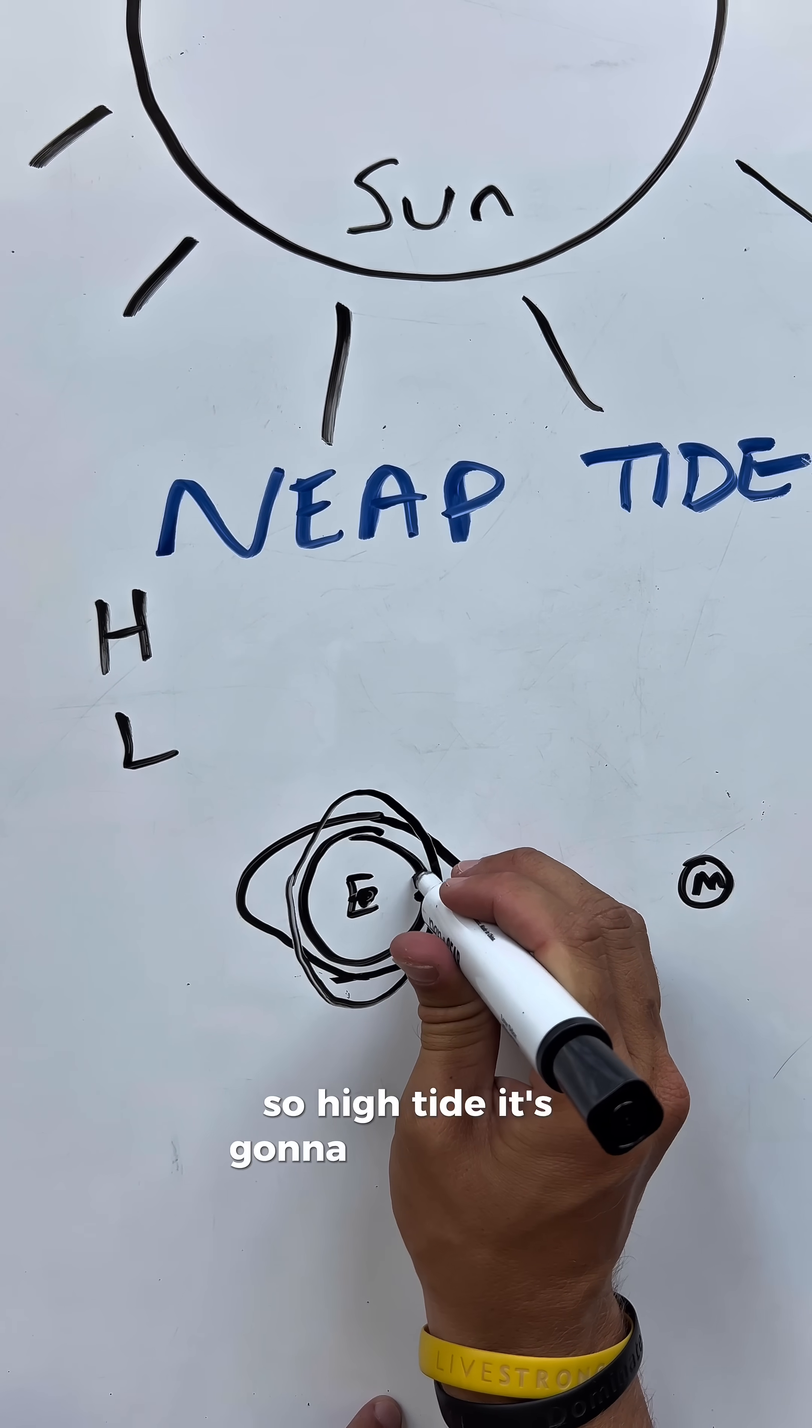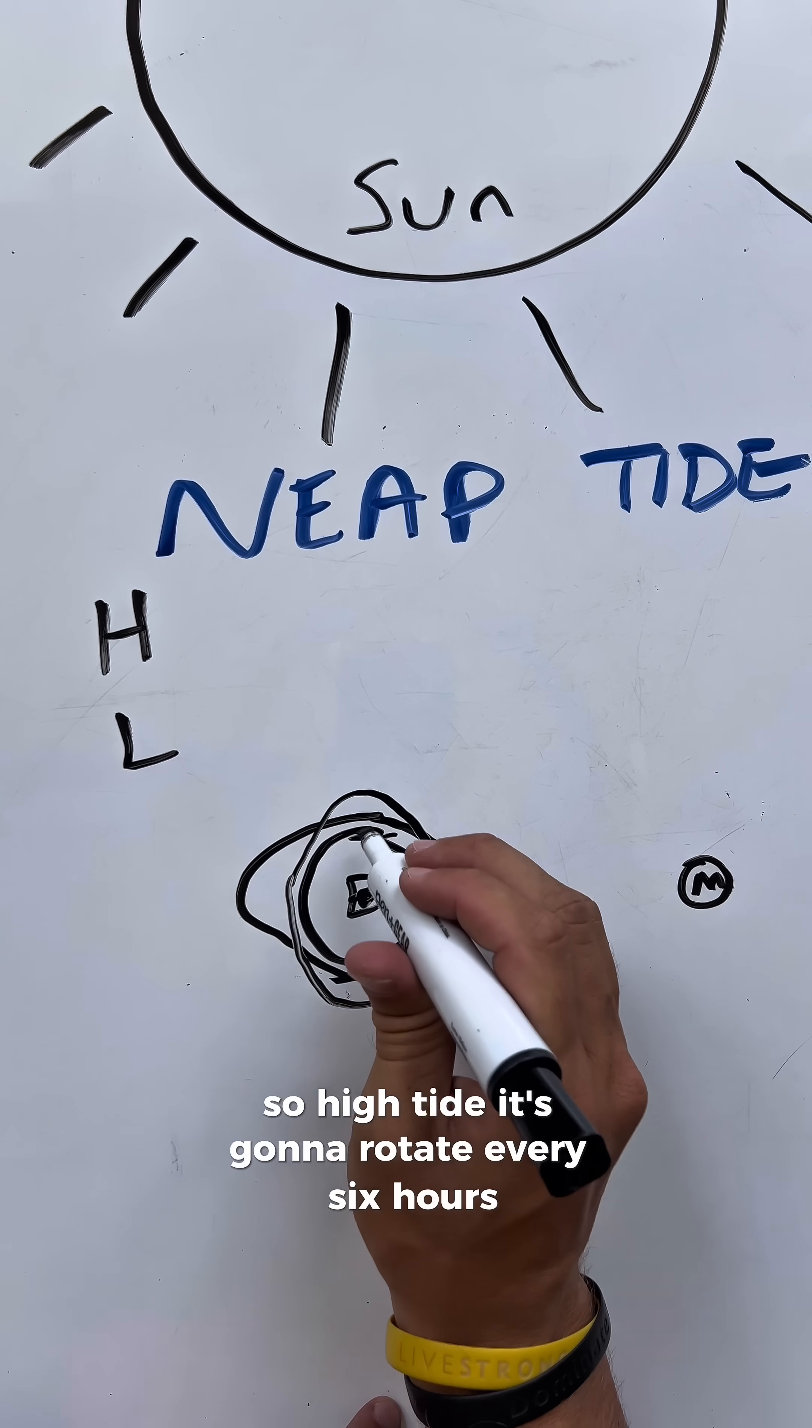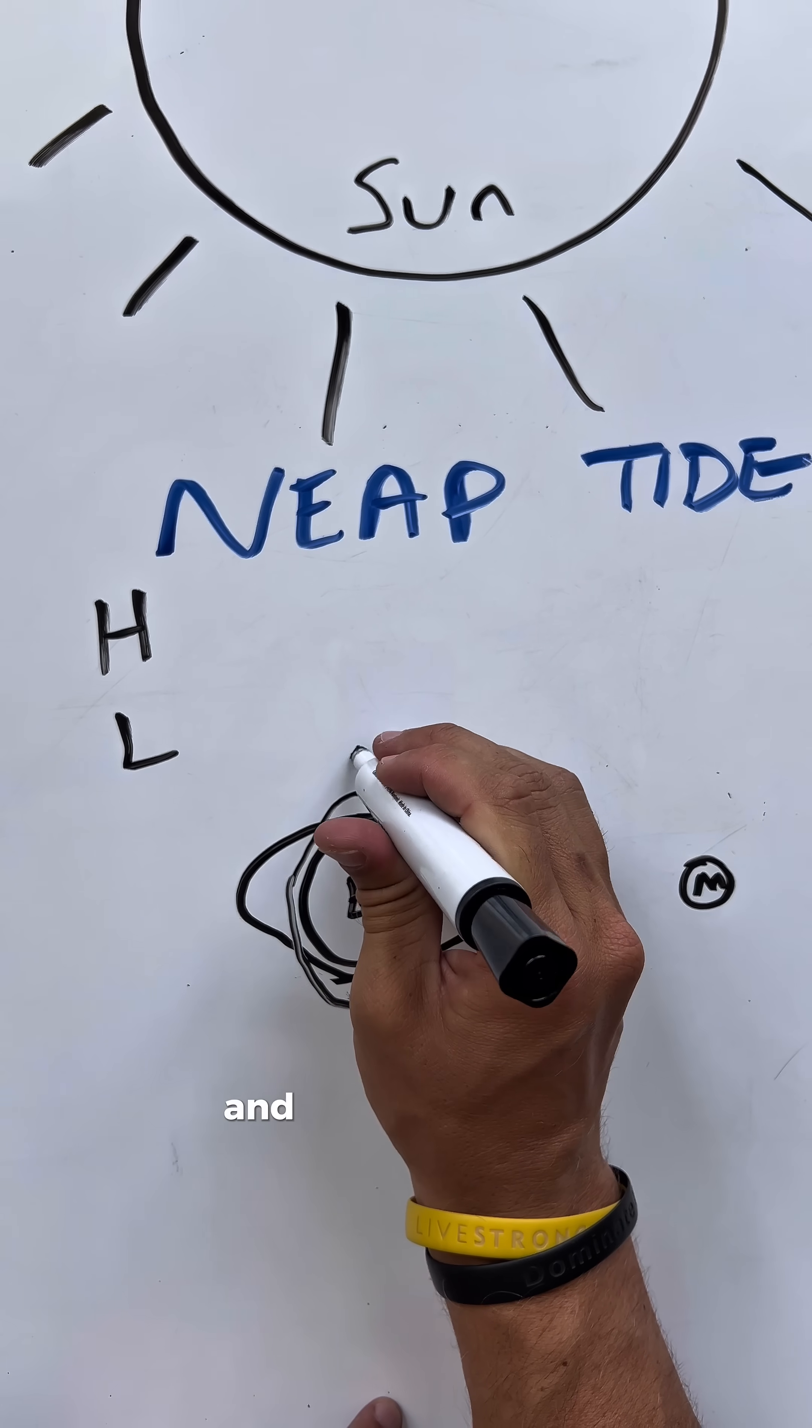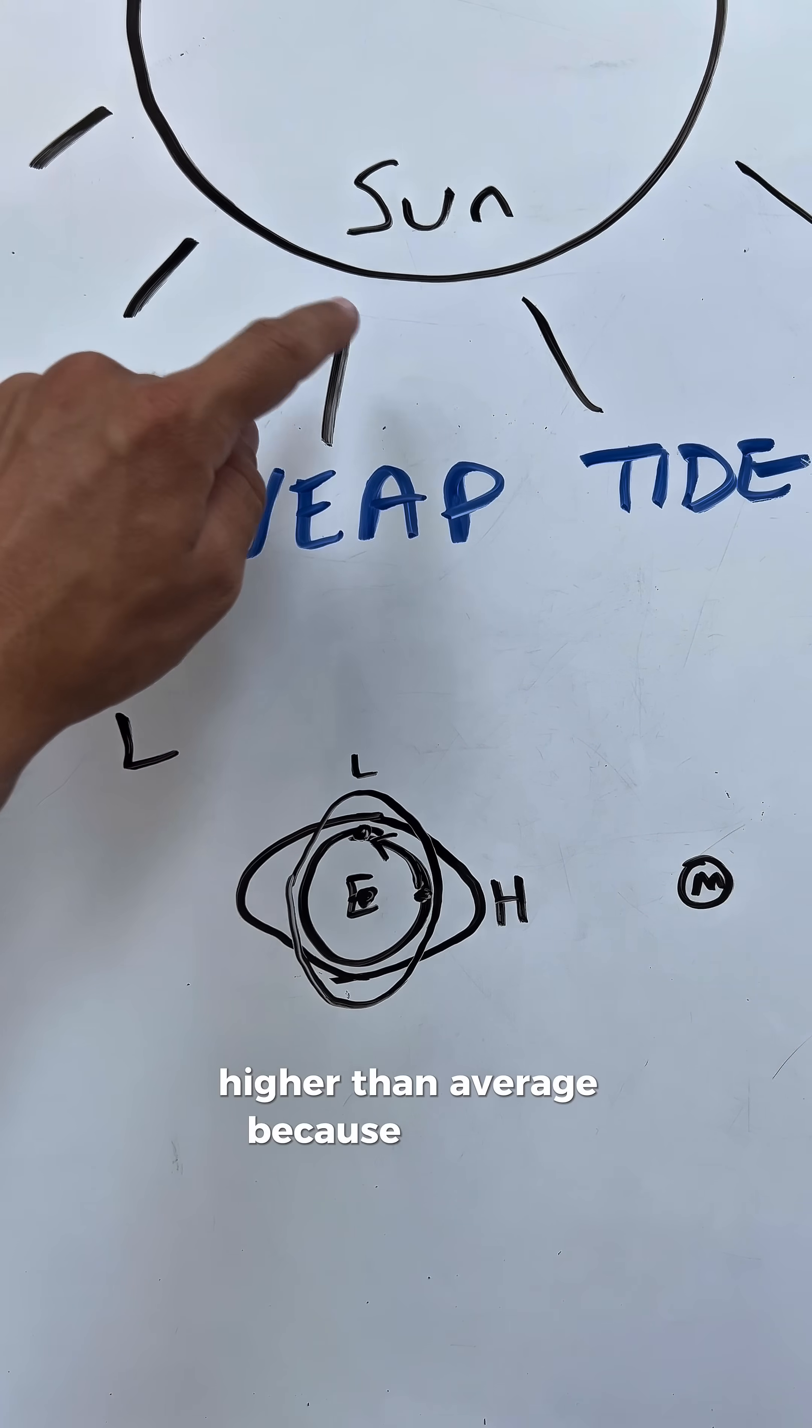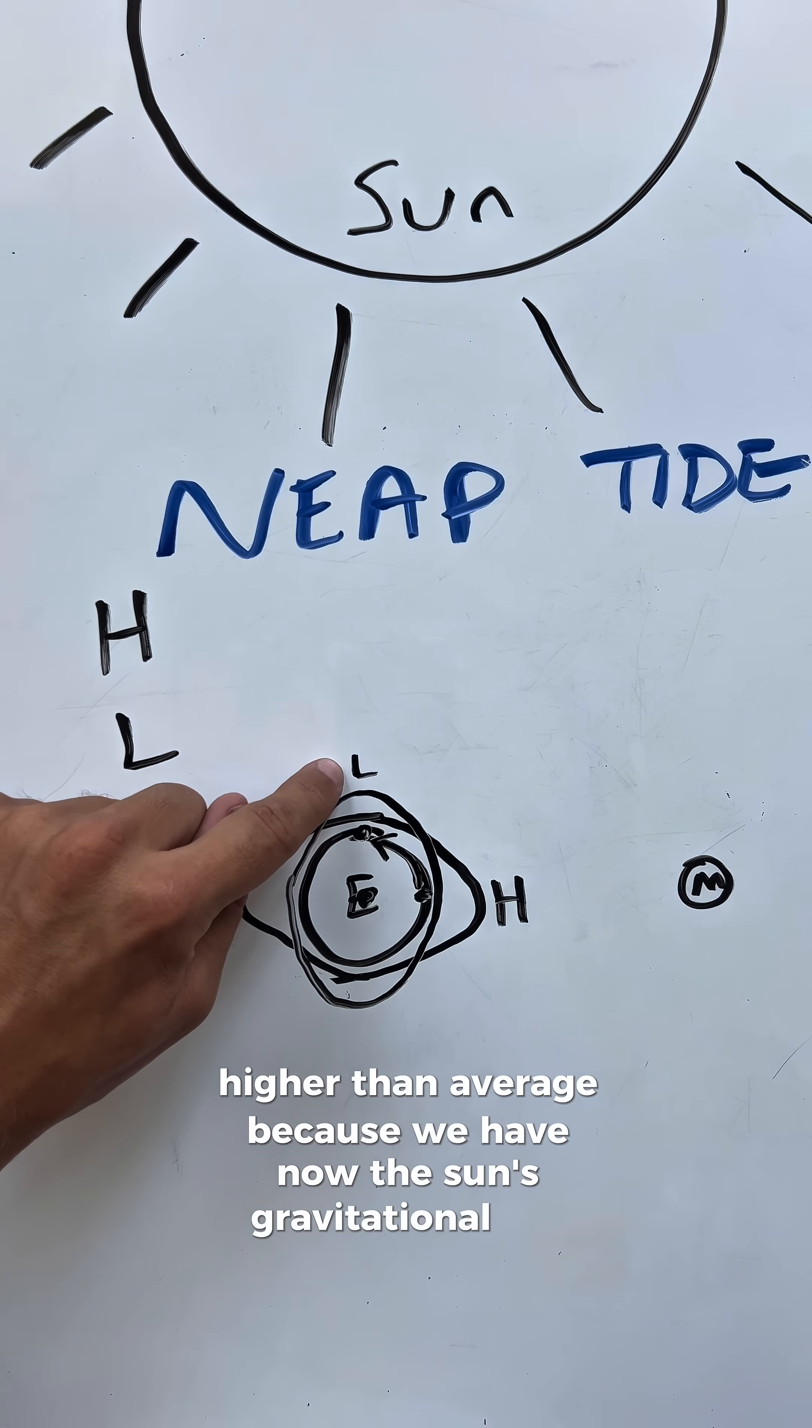So high tide is going to rotate every six hours, then you get to low tide, and that low tide is going to be a pretty high low tide, higher than average, because we have now the sun's gravitational pull.